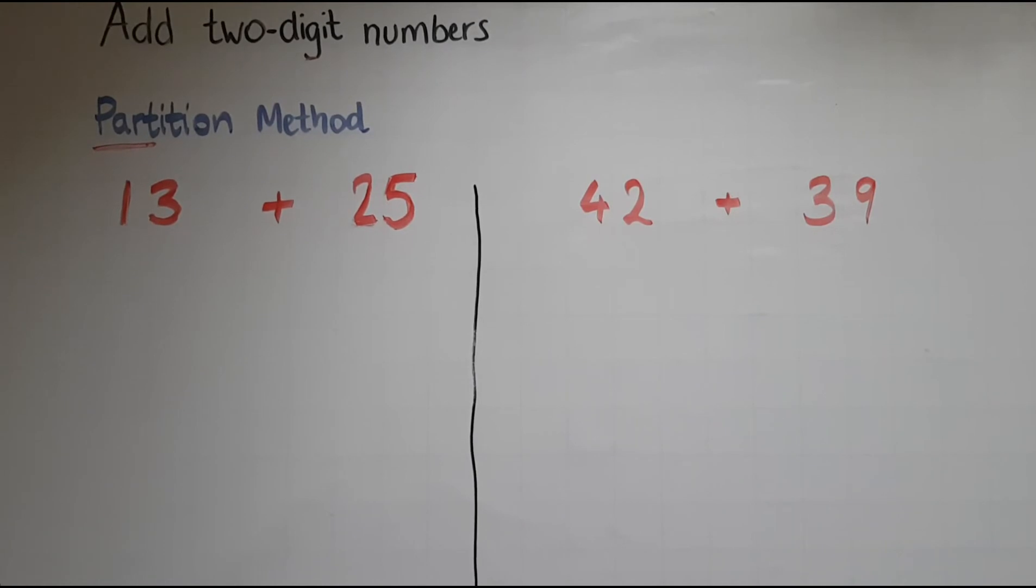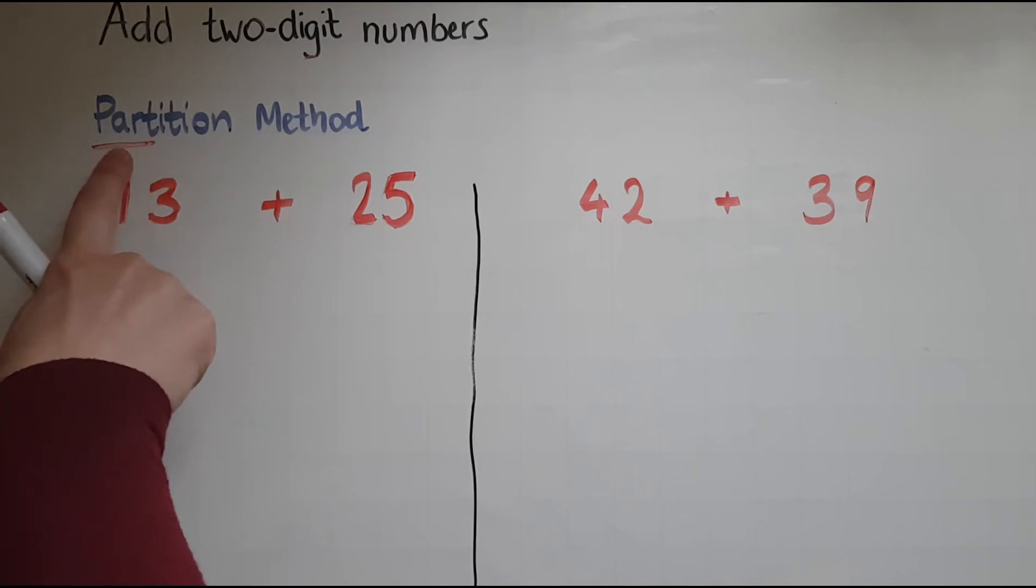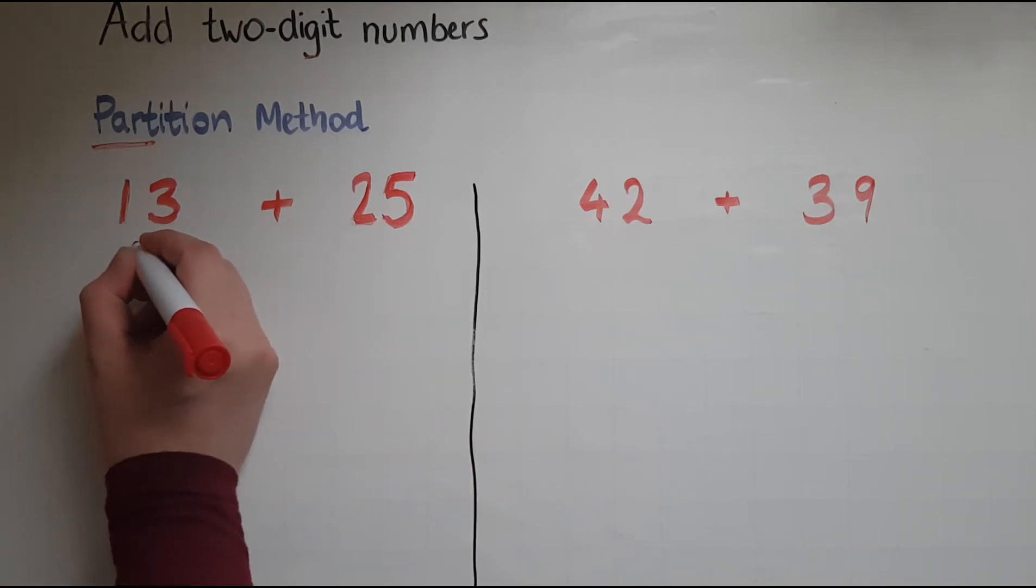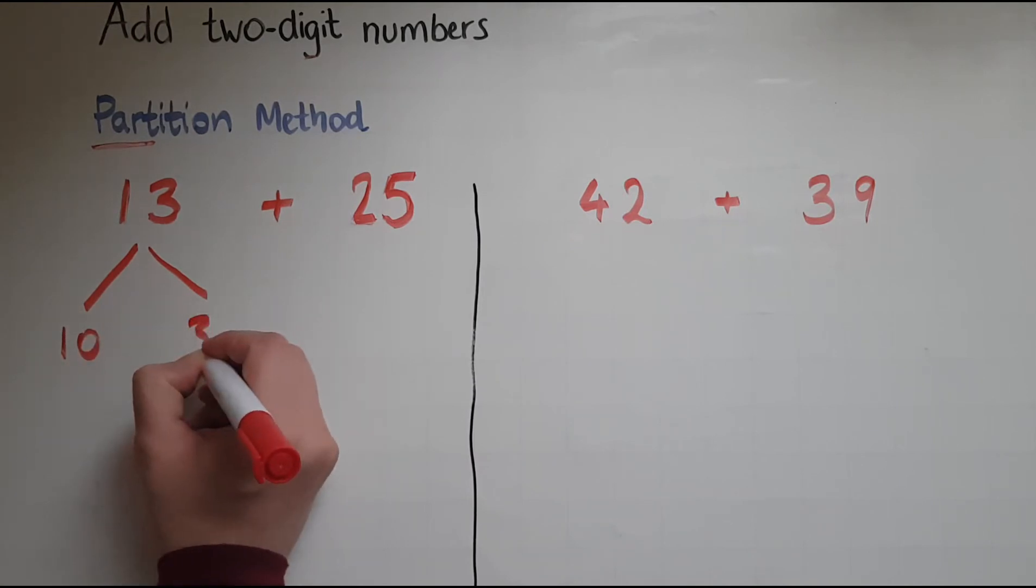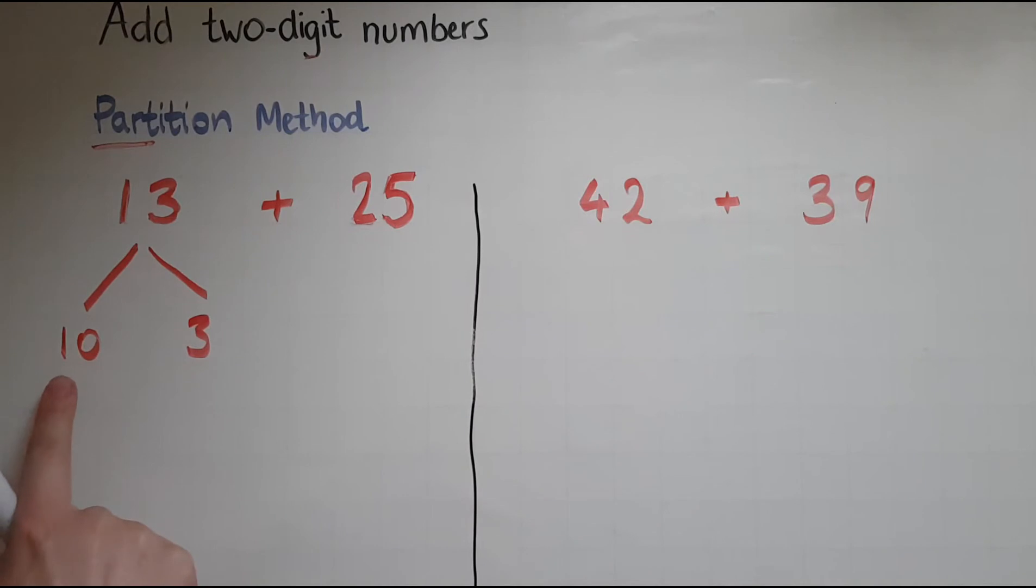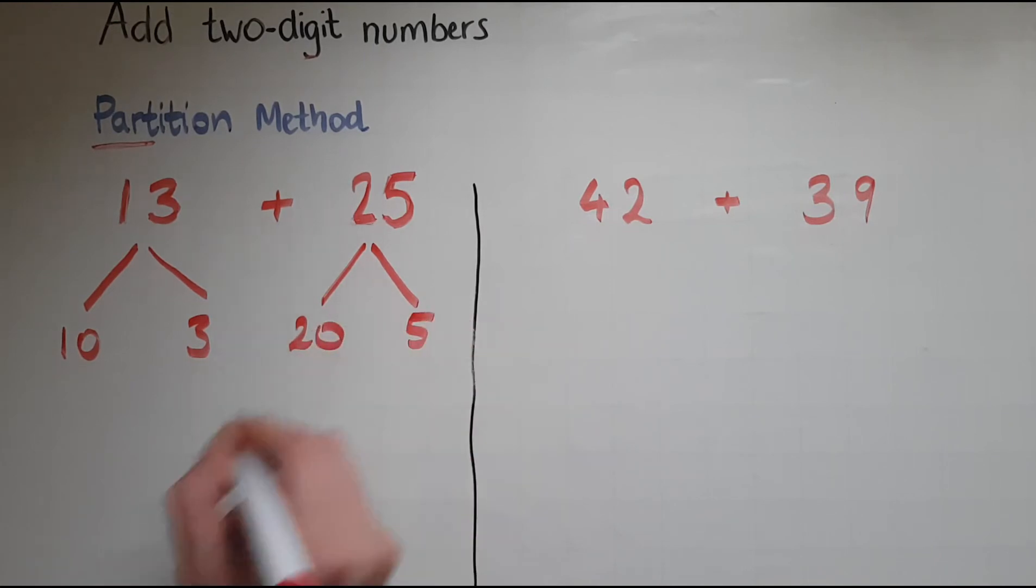In this video we'll learn to add 2-digit numbers using the partition method. As the name suggests, partition is about breaking numbers down into parts. And I'll show how. So we've got here 13 and 25. 13 can be broken down into 10 and 3, so tens and the units separated. 25 is broken down into 20 and 5.